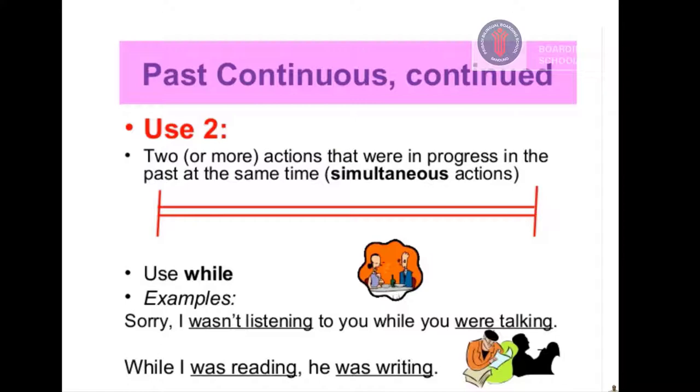Okay, now we can start our new topic: past continuous. You can see there is an example and timeline. Two or more actions that were in progress in the past at the same time. You can see it's two different actions in the past that happen at the same time. For example, sorry I wasn't listening to you while you were talking. While I was reading, he was writing.